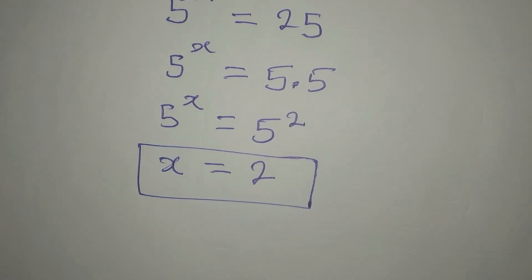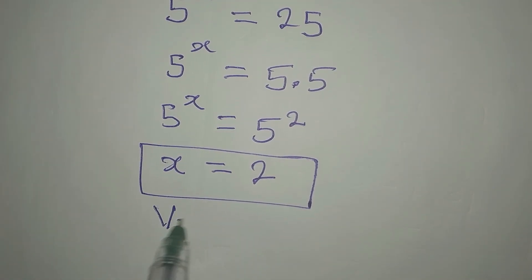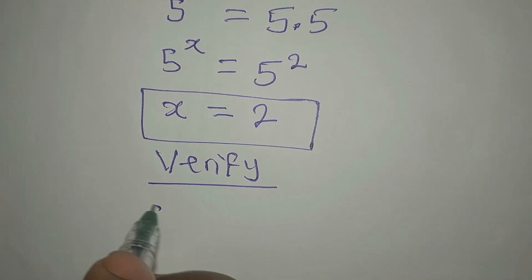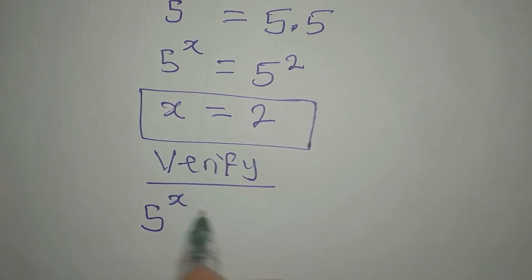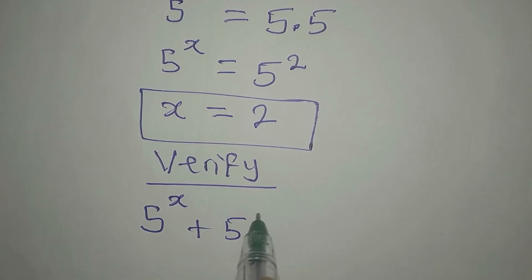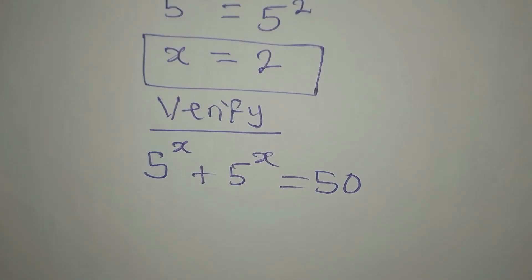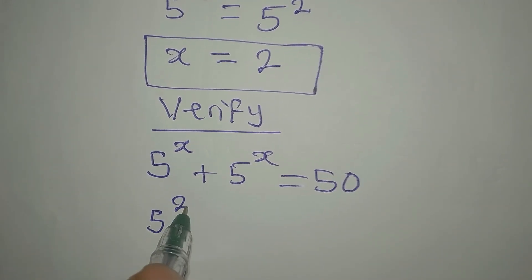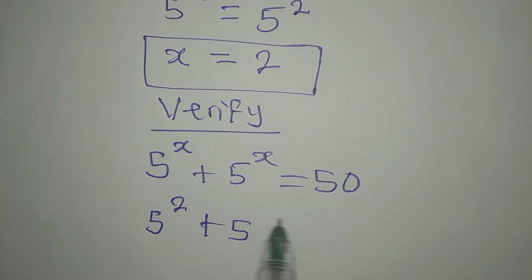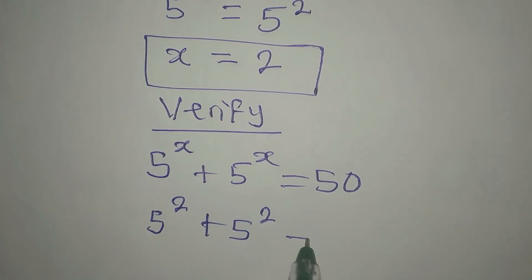This is the solution to the problem, but like you know, we always verify to make sure that we are correct. The equation given is 5 to the power of x plus 5 to the power of x equals 50. Now if that is the case, x will be 2, so 5 to the power of 2 plus 5 to the power of 2.